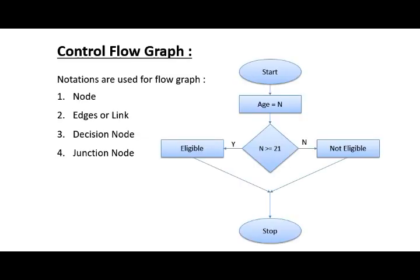Notations are used to draw the control flow graph. There are mainly four notations: node, edge or link, decision node, and junction node.